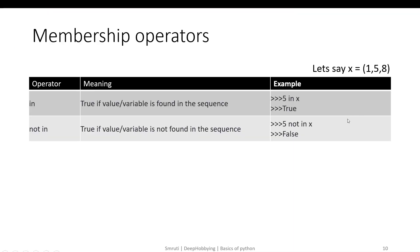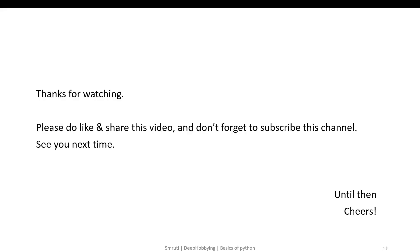To understand membership operators, we need to understand four other data types we haven't discussed yet — tuple, list, dictionary, and set. For now, let's say a tuple is a collection of numbers, and X is a tuple with members 1, 5, and 8. There are two membership operators in Python: 'in' and 'not in'. Asking '5 in X' returns True since 5 is a member of X. Asking '5 not in X' returns False. I'll show a practical example when we cover tuples in the next tutorial. With this, I conclude Python operators.